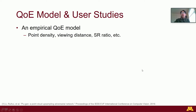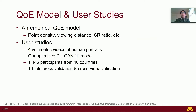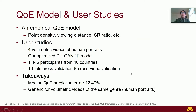We first propose an empirical QoE model considering factors that affect users' QoE of volumetric videos. We conducted user studies to validate our model and obtain its parameters. We chose four volumetric videos of human portraits and used our QoE model to generate sampled videos for users to rate. Our user studies involve 1,446 participants from 40 countries. We used all the collected ratings to validate our model through both 10-fold cross-validation and cross-video validation. The key takeaways are: first, our QoE model achieves a median QoE prediction error of 12.49%; and second, our QoE model and its parameters are generic for volumetric videos of the same genre.